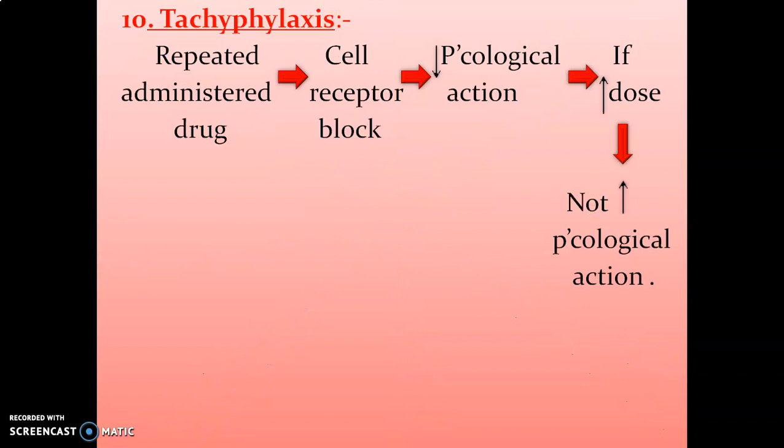Then tachyphylaxis. When you administer a drug in repeated doses, it may block the cell receptor, which decreases the pharmacological action. Even if you increase the dose of the drug, the pharmacological action will not increase — that is called tachyphylaxis. Remember: repeated doses may block the cell receptor, decrease pharmacological action, and increasing the dose will not increase the pharmacological action.